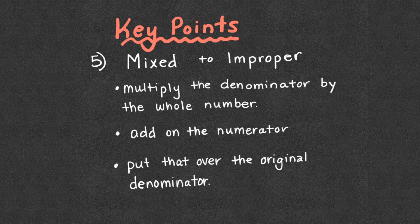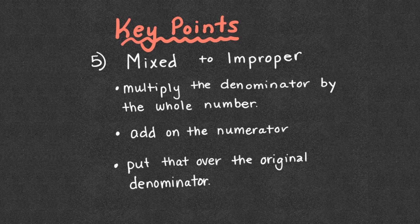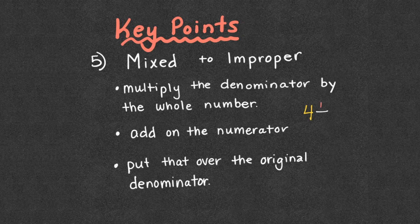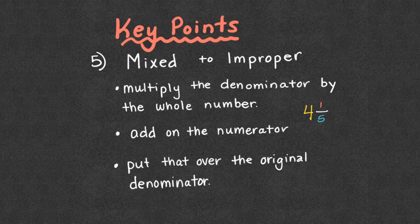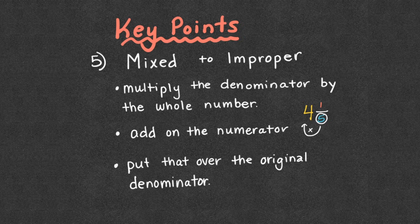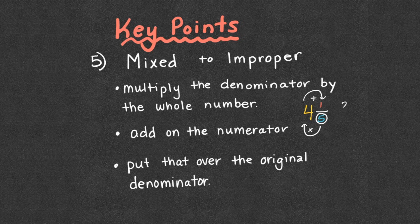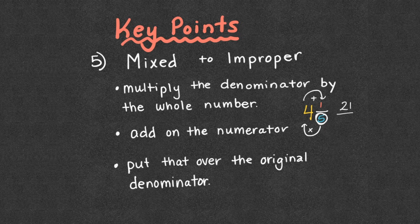If we're going from mixed to improper, we're going to multiply the denominator by the whole number, add on the numerator, and put that over the original denominator. So for example, if I had 4 and 1 fifth, it says multiply the denominator by the whole number. So that means that we have 4 whole pieces that have 5, or 4 wholes that have 5 pieces in each. So that tells me that so far we have 20 of them. Then I add on my 1 left over, which would make it 21. So I'd have 21 pieces. And how many pieces are in each whole? That's our denominator. Fifths. 21 fifths.